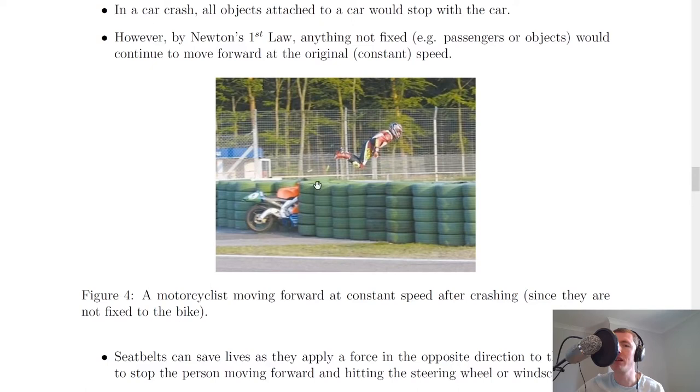So in this example here we've got a motorcyclist hitting a set of tyres, and because they're not attached to the motorbike via a seatbelt, they're going to move off at the same constant speed that the motorbike was doing when it hit into the tyres.